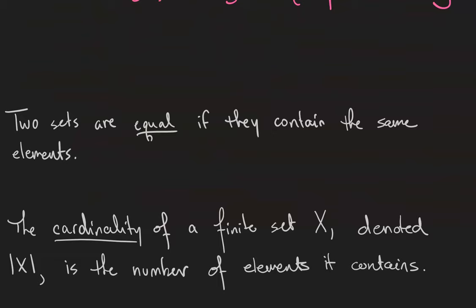So two sets are going to be considered equal if they contain the same elements. So for example, the set AB is equal to the set BA.